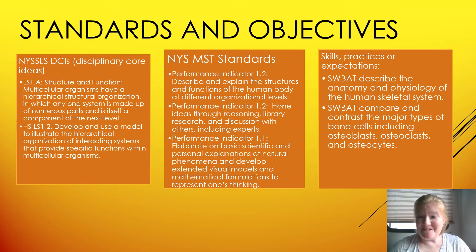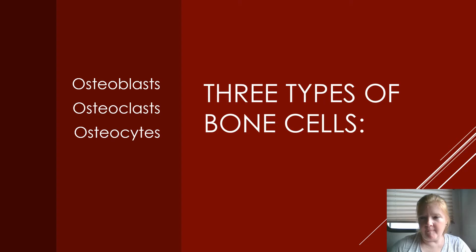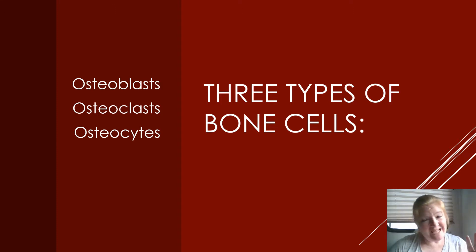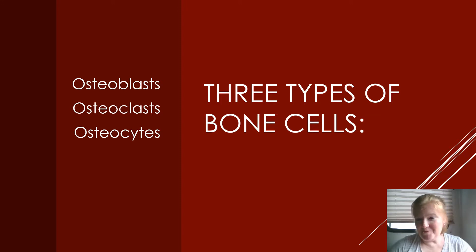Here are the standards and objectives — pause and peruse if you wish. The three types of bone cells we're going to talk about are osteoblasts, osteoclasts, and osteocytes. They kind of sound similar, so it can be confusing. Hopefully by the end of this lesson you'll have them straight.